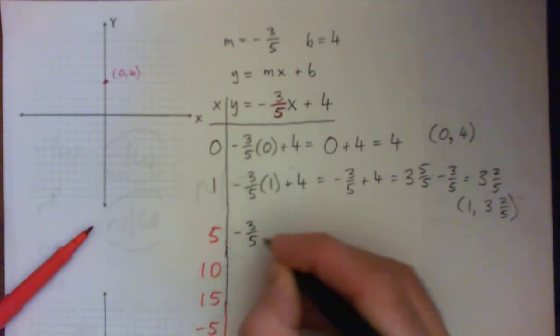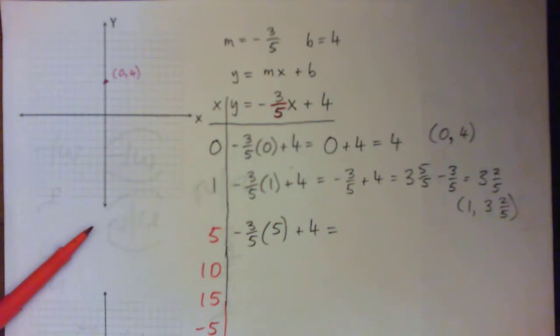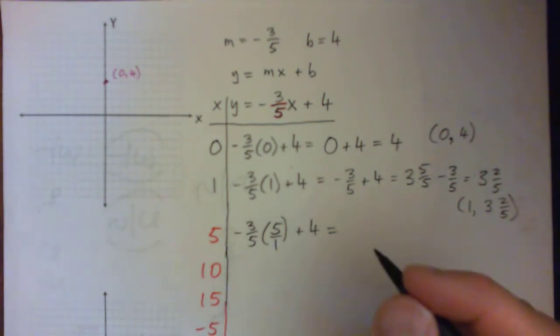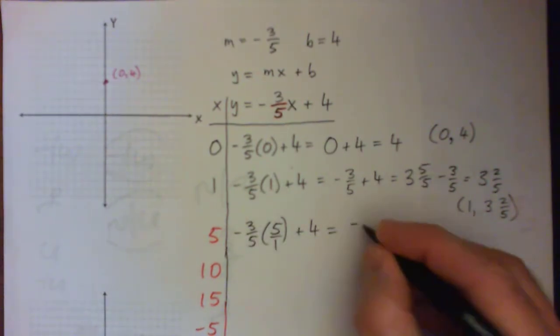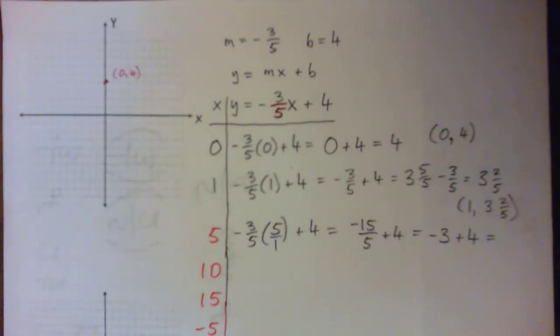They do cross-cancel. We could also do 5 over 1. Some students like to multiply across before cross-canceling, which is not the simplest way, but let's do it anyway. -3 times 5 gives -15 over 5 times 1, which is 5, plus 4. Now -15 over 5 is -3, and -3 plus 4 gives 1.